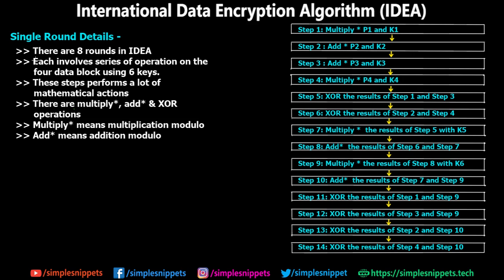There are 8 rounds in the IDEA algorithm. Each involves a series of operations on 4 data blocks using 6 keys. The 64-bit plain text block is divided into P1, P2, P3, and P4, each 16 bits. Each round involves series of operations on these 4 data blocks using 6 keys, and every round requires 6 keys.